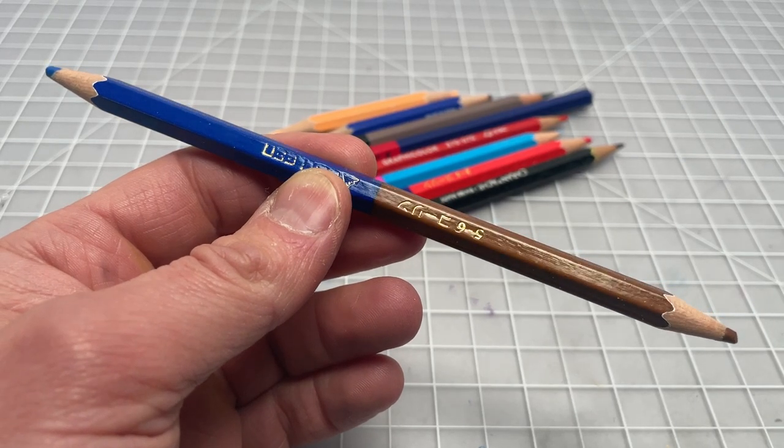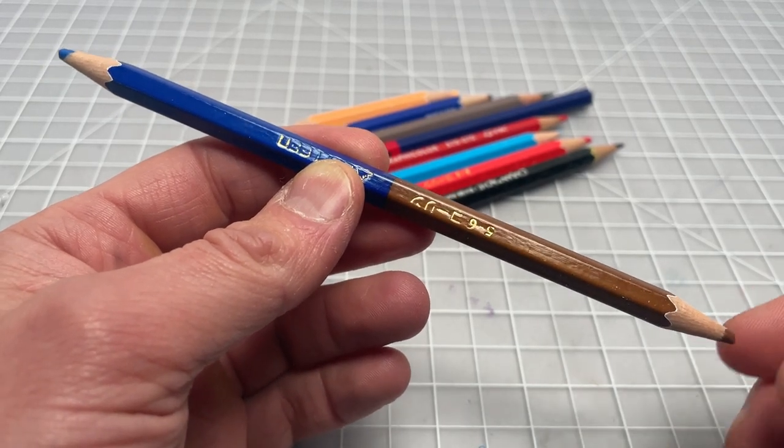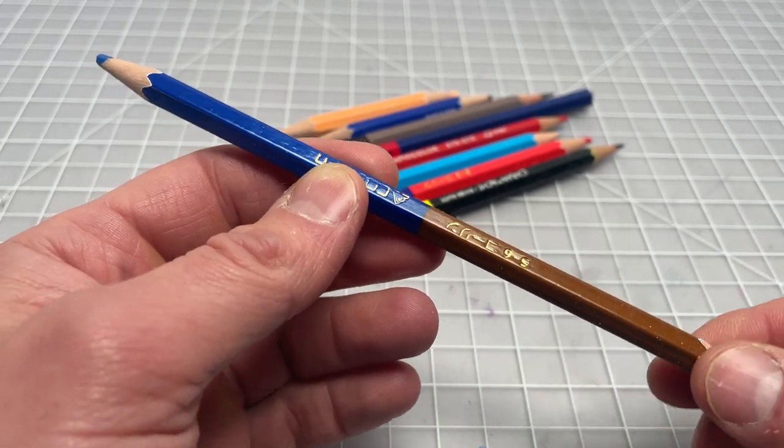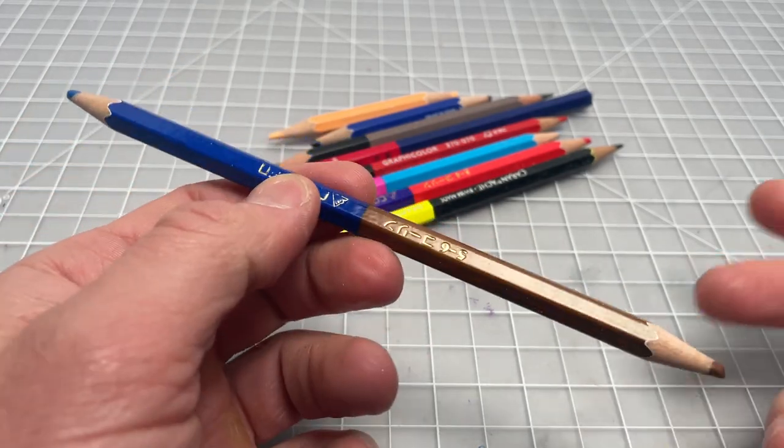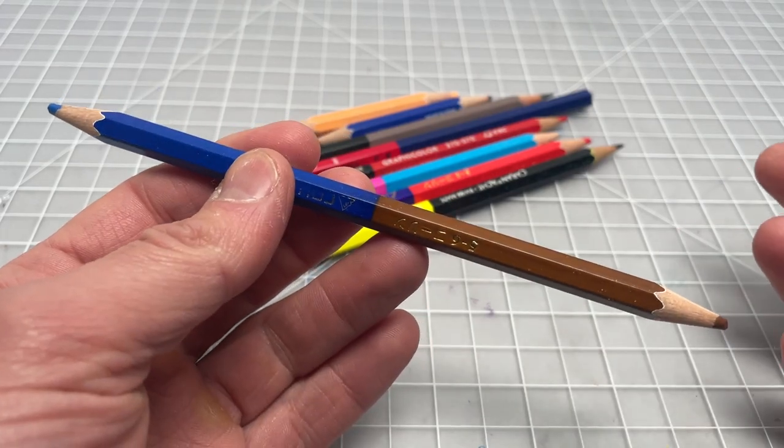So in this video, I wanted to spend some time talking about double-sided colored pencils. These are basically a wooden pencil that has a color on one side and a color on the other side.